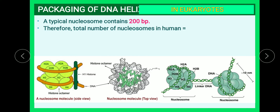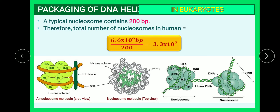To calculate the total number of nucleosomes in a human cell: a diploid cell has 6.6 × 10⁹ base pairs. Dividing by 200 — since one nucleosome contains 200 base pairs — gives 3.3 × 10⁷ nucleosomes present in a human cell.